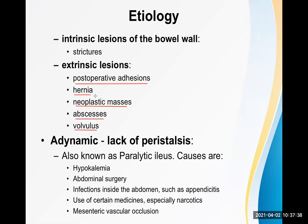A strangulated hernia can also result in intestinal obstruction; an obstructed hernia will usually progress to strangulation. Neoplastic masses such as lymphoma developing in the abdominal cavity can press the intestine from outside. Abscesses can similarly cause obstruction. Volvulus — twisting of the bowel — narrows the lumen and causes obstruction.